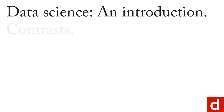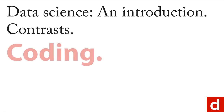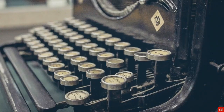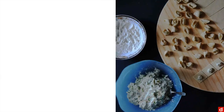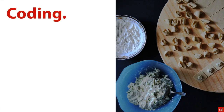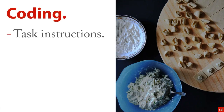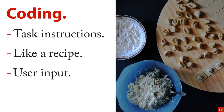Another important contrast you can make in trying to understand data science is to compare it with coding or computer programming. This is where you're trying to work with a machine and talk to it to get it to do things. You can think of coding as just giving task instructions — how to do something — and it's a lot like a recipe when you're cooking. You get some sort of user input or other input.